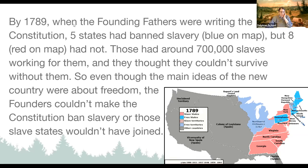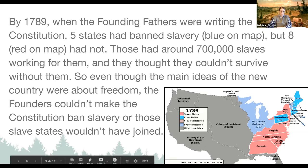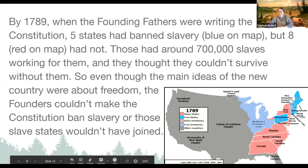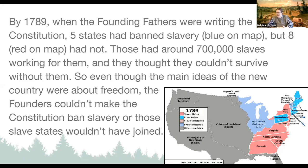As time went on, many in the north began to feel slavery was evil and they wanted to ban it. In 1789, when the Founding Fathers were writing the Constitution, five states had already banned slavery: New Hampshire, Massachusetts, Rhode Island, Connecticut, the Vermont Republic, and Pennsylvania. But eight states had not banned it.